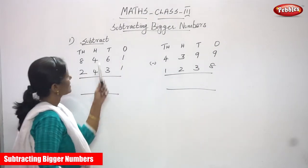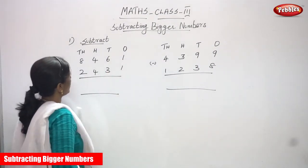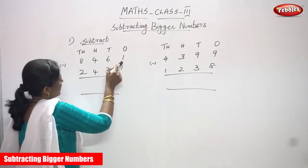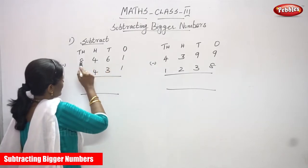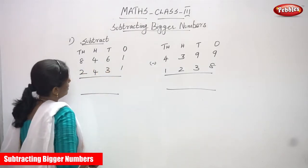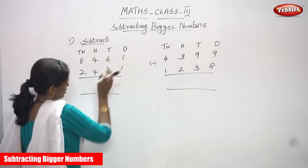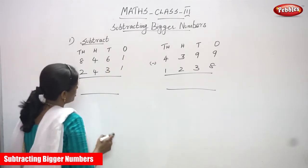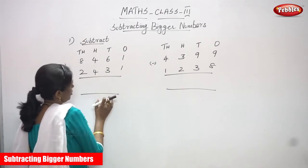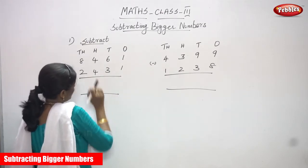Now we are going to see subtracting bigger numbers. First question: subtract. This is a four-digit number with 1s, 10s, 100s, and 1000s place. Generally we have to start with the ones place. We have to subtract from the bigger number to the smaller number.